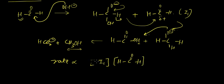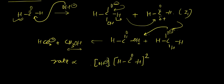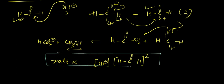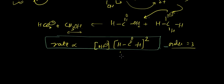Instead of calling it I1, we can write it as the aldehyde concentration squared, because at the first step OH- attacks, and in the second step the two same compounds determine the rate. Hence, rate is proportional to [OH-][aldehyde]^2, so the overall order for this reaction is 3.